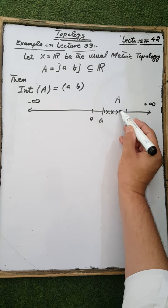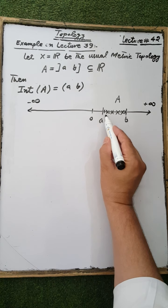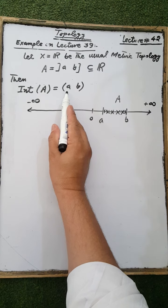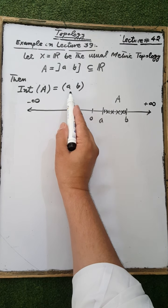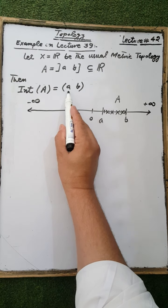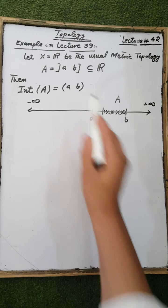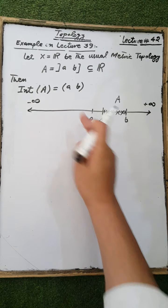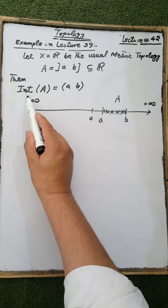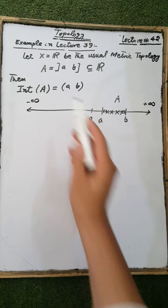There is an open interval for each point of the set A such that that open interval is contained in the set A. Therefore the interior of the set A is the open interval from point a to point b, which is the interior set of A.